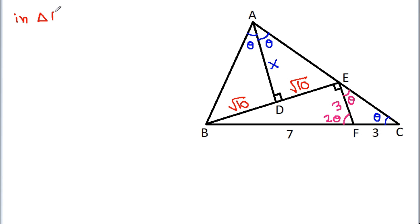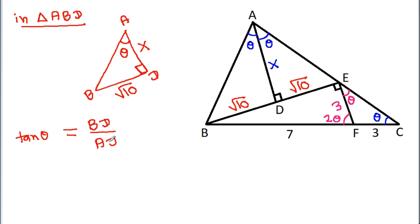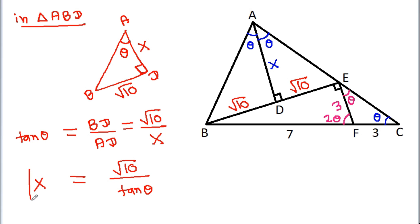Now, in triangle ABD, this angle is 90 degrees, BD is square root of 10, AD is X, and this angle is theta. So tan theta equals BD divided by AD, that is square root of 10 divided by X. So X equals square root of 10 divided by tan theta.